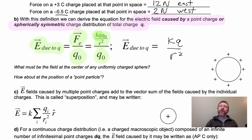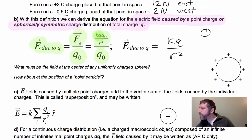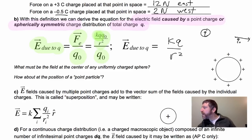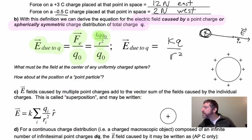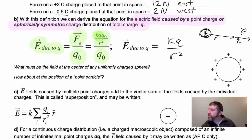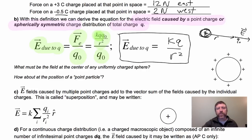So E = kq/r² is the field caused by a charge q at a distance r away. If I've got a charge q here and a tiny test charge Q₀ at distance r, that equation gives the field caused by q at that point.